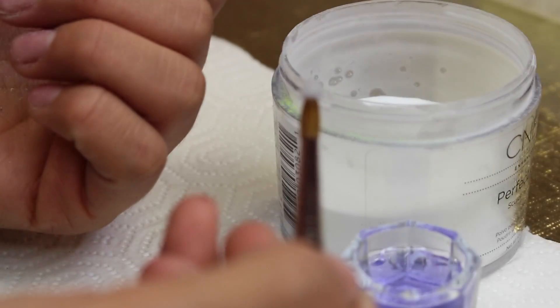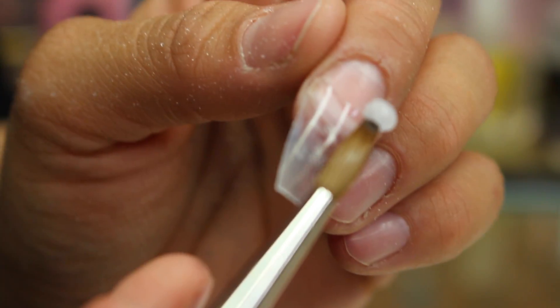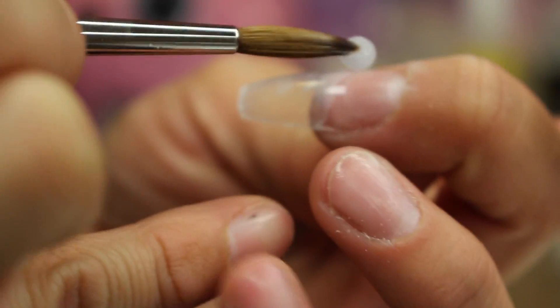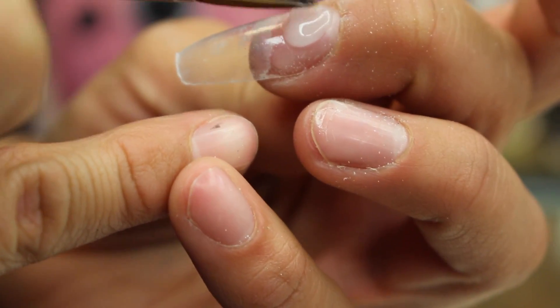I always like to dry my bead on my paper towel so that I don't have any extra monomer. I'm going to be starting at the cuticle. Now guys, you have to forgive me. This is my first nail video ever, so I was completely getting out of focus and out of range.